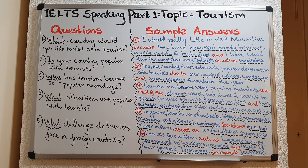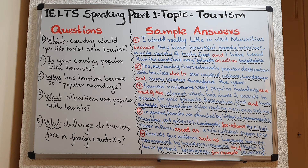This brings me to the last section of this lesson, where I'm going to give you some tips using the sample answers to ensure that you get a very high band for your IELTS speaking. Tip number one: make sure that you understand the question. In each question, listen very carefully to the keyword. For example, 'Which country would you like to visit as a tourist?' — the keyword here is 'which'. And for each question, always answer the 'why' part, whether you are asked or not. 'Is your country popular with tourists?' — yes or no, and then give your reasons. There is always a 'why' part.